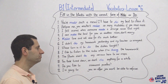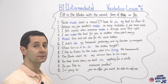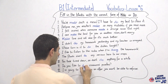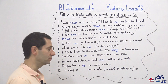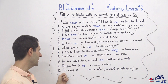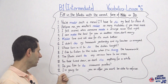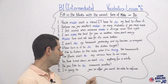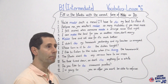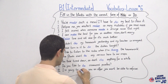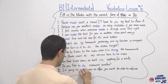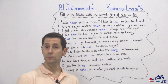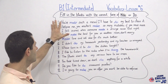Number eleven: 'Do you like to do crossword puzzles?' Remember with 'crossword' we use do — 'yes, I like to do them.' Number twelve: 'I'm going to make you an offer you won't be able to refuse.' With 'offer,' we use make — 'I'm going to make you an offer.'